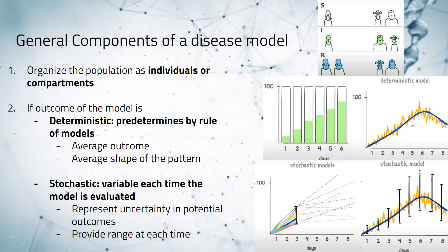However, with deterministic models, we can never accurately predict any outbreak since we're only getting the simple patterns. With the stochastic model, it is beneficial when representing uncertainty and potential outcomes, because it provides a range at each time that captures all the observed points. The downside is that because there is a range, you can only get a fuzzy answer with a potential error.